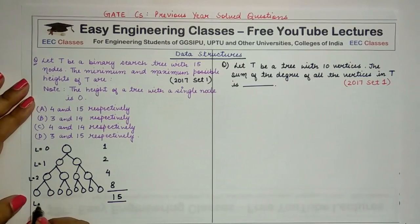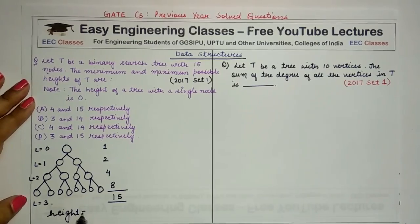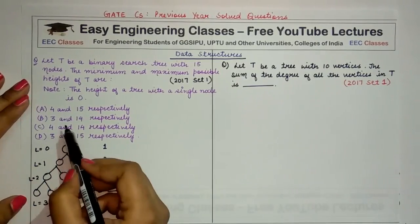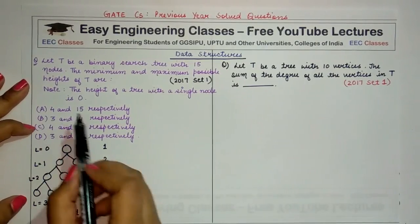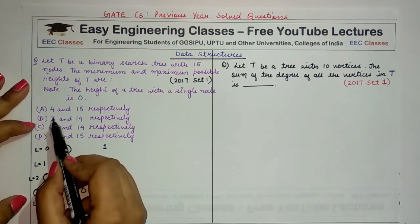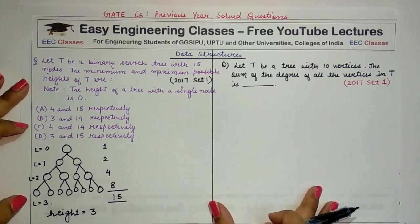Okay, so A and C are eliminated for the first option. Now you have to choose between B and D. If you have to find the maximum possible height of a tree with a given number of nodes, you have to draw a one-sided tree.